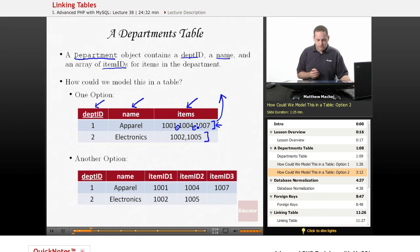So another option you might think would be, let's have a department ID column again, a name column again. But then this time, we just create a column to store each item ID of each item in the department. So we'd have a different column for each item in the department. So we might have one called item ID 1, item ID 2, and item ID 3.